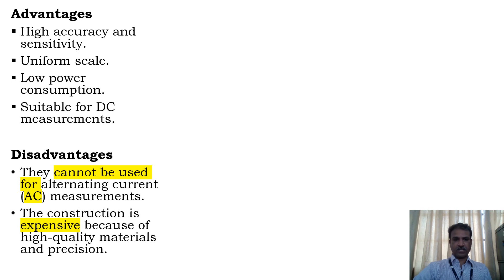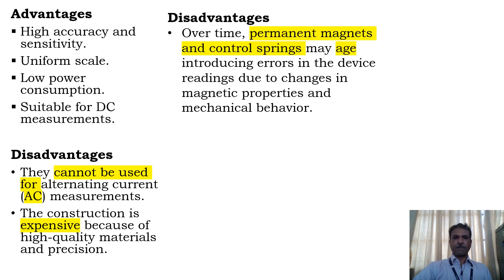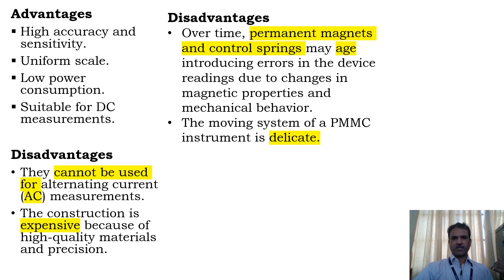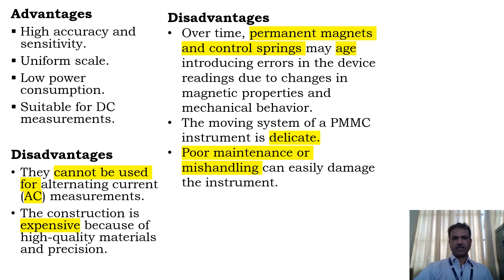The construction is expensive because of high quality materials and precision. Over time, these permanent magnets and control springs may lose their magnetic properties and mechanical behavior, so there can be errors in the reading. The moving system of the PMMC instrument is delicate. Poor maintenance or mishandling can easily damage the instrument.